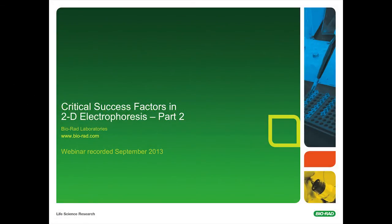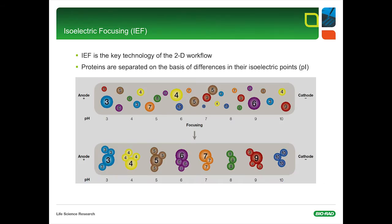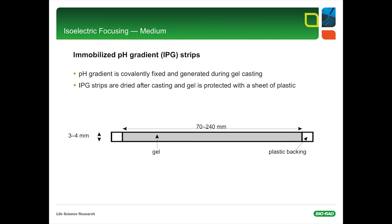The next main topic is isoelectric focusing with immobilized pH gradients. Isoelectric focusing is the key technology of the 2D workflow. Proteins are separated in an electric field based on differences in their isoelectric points, independently of their size. The proteins migrate until they reach the isoelectric point where the net charge is zero. The best medium for high-resolution isoelectric focusing is an immobilized pH gradient strip, or IPG strip. Commercially available IPG strips are 3 to 4 mm wide and up to 240 mm long. The IEF polyacrylamide gel is cast onto a plastic backing for better handling. The pH gradient is covalently fixed and generated during gel casting. IPG strips are dried down after casting and the polyacrylamide gel is protected with a thin plastic sheet.